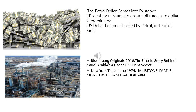The US was aware of the precarious position of the dollar unbacked by gold, and negotiated a deal with Saudi Arabia to ensure that all oil trading would be done in dollars. This effectively ensured that the dollar became backed by the global trade in petroleum instead of gold.